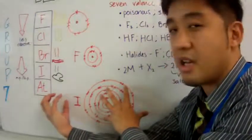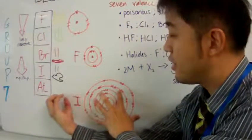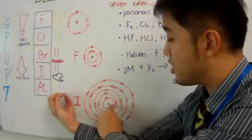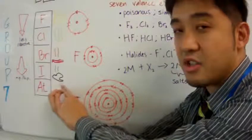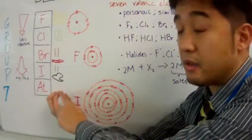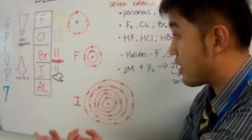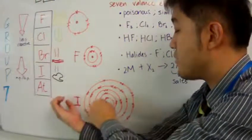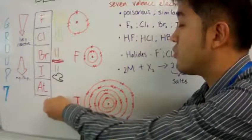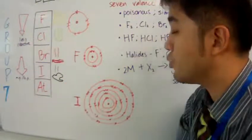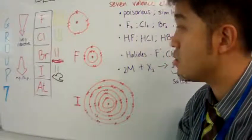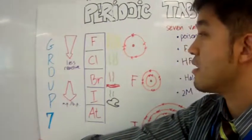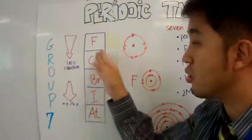Iodine is really big, so when it comes close to another element like a Group 1 metal, the electrostatic attraction from the nucleus of iodine to the valence electron is much weaker because the distance is much further. There's less pull from the nucleus of iodine to pull that valence electron onto iodine to form iodide. This is a simplified explanation of why it gets less reactive as you go down the group.